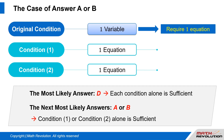The next most likely answers are A or B. The original condition gives us one variable; condition 1 gives one equation; condition 2 gives one equation. Each pairing — original condition plus condition 1, and original condition plus condition 2 — gives us one variable and one equation, meaning two sets of matching variables and equations. Since we can solve for a unique value for each condition, D is most likely the correct answer.